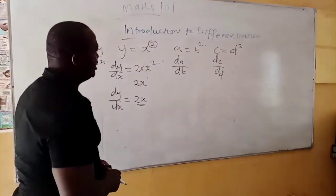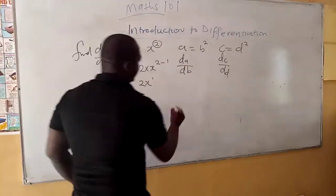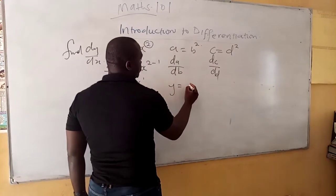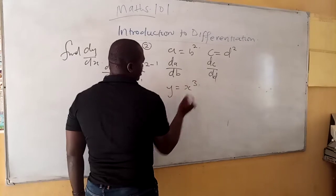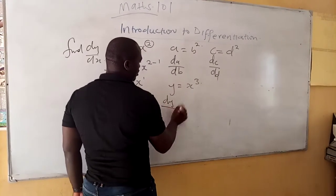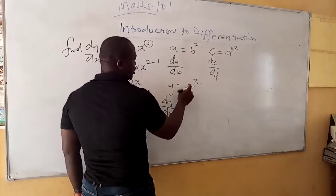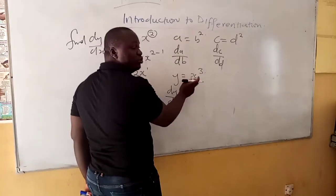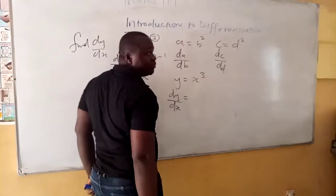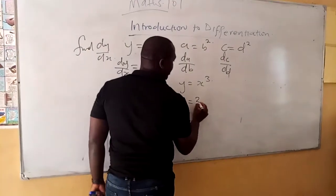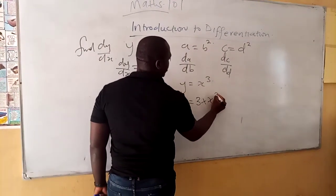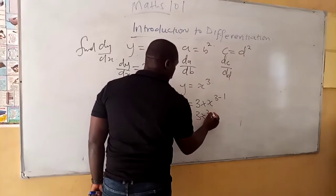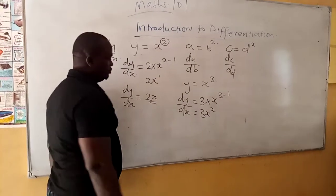Let's do another one. If I give you that y is equal to x cubed, then dy over dx is equal to this: you look at the power, carry the power, multiply the numerator, and minus 1 from the power. So it becomes 3 times x, and you write the power back minus 1, giving you 3x squared.